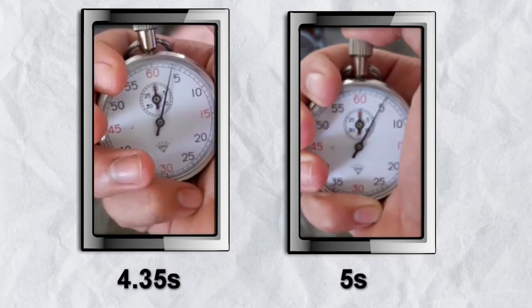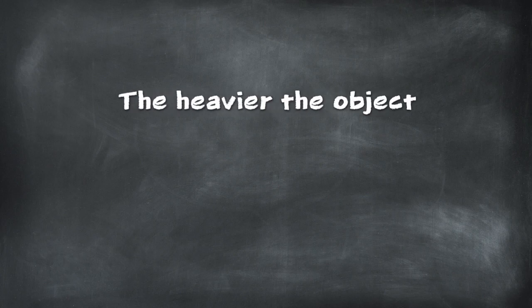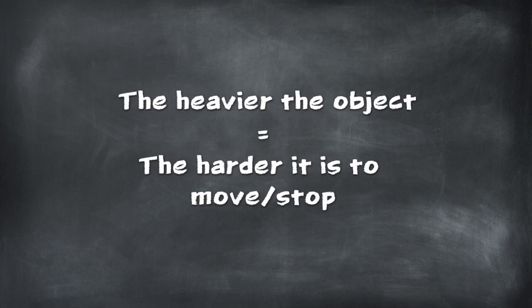Now with this, we can easily conclude that the object with the higher mass, meaning a higher inertia, will oscillate longer, which shows that the heavier the object is, the harder it is to move and stop.